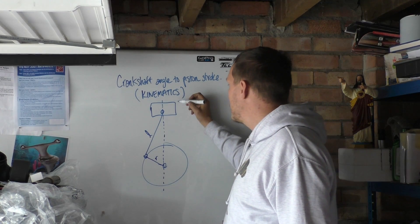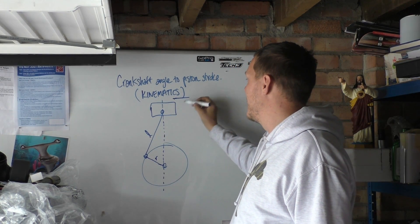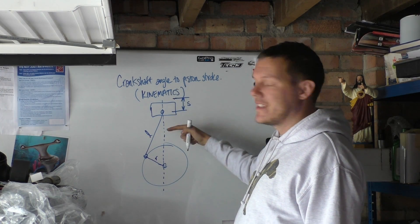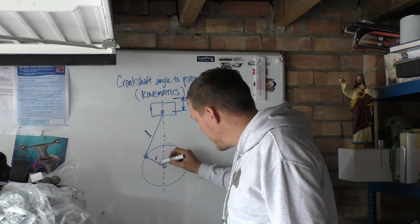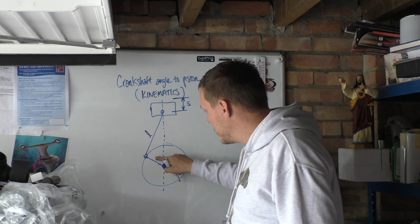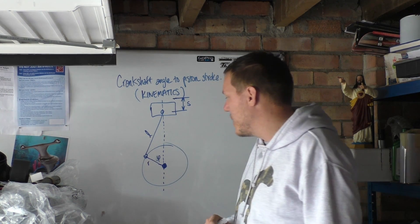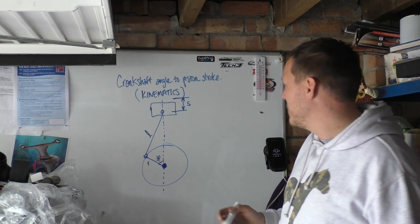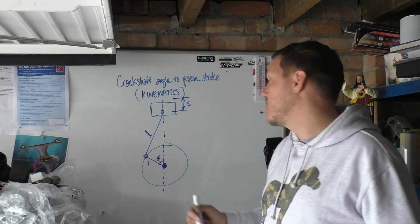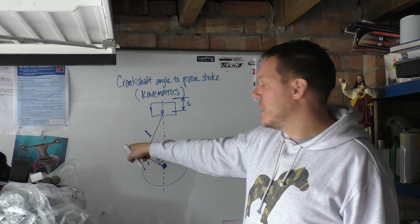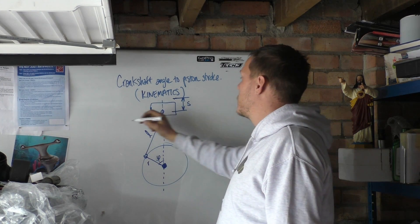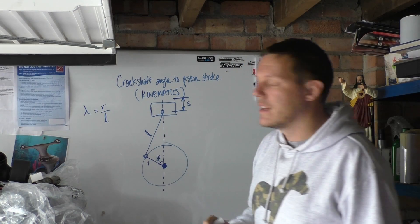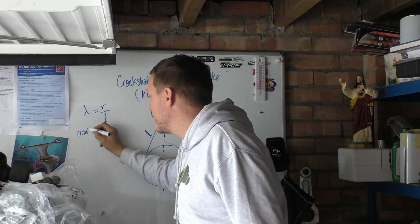We've got this imaginary line, and basically what we're trying to work out is - say our wrist pin was there and now it's there - we're working out that distance which we'll call S, which is our stroke. It used to be there and now it's there - how much has that moved in relation to our angle? So then we have to add our angle phi, which is our crank angle. There's one other thing we really need to know and that's what we call our crank ratio. Our crank ratio is our radius over our length, and we usually use lambda to signify that - so lambda equals R over L.